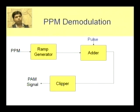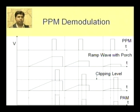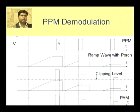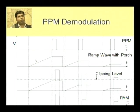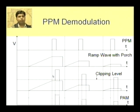The clipper will clip the wave below a particular level and pass the wave above it. The procedure is almost the same, but the difference is that here the ramp generator does not depend on the width of the pulse — instead it depends on the starting position of the pulse. Wherever the pulse starts, the ramp generation will end there and the porch will start. So the height of these different ramp waveforms will depend upon the starting position of the PPM pulse.